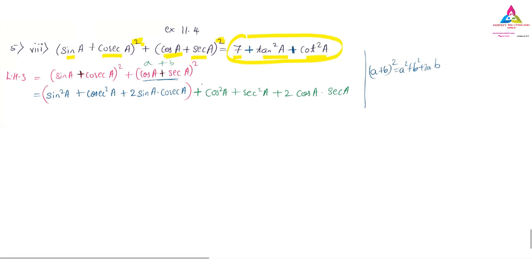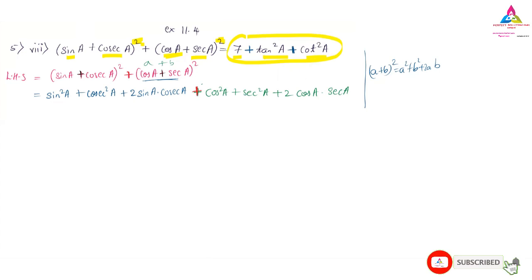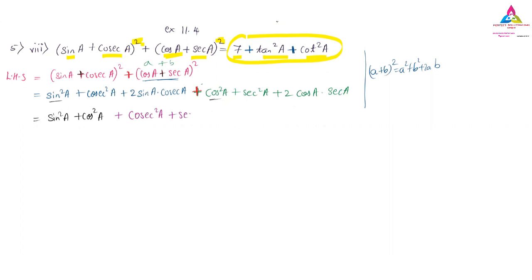Since we have a plus sign outside, everything remains the same. I am now collecting like terms. I will group sin²A with cos²A as one pattern. Then I will write cosec²A and sec²A together. Finally, the cross terms: 2·sin A·cosec A and 2·cos A·sec A, written as they are.